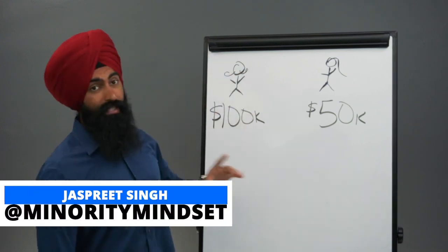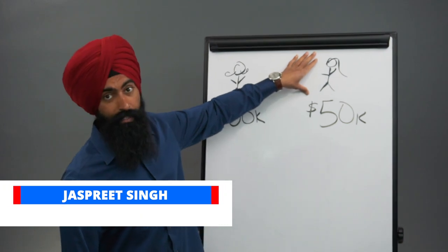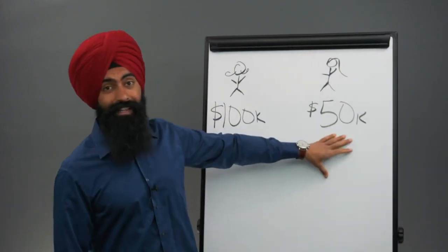Over here you have cousin Bunty who graduated school making $100,000 a year, and over here you have sister Paramjit who graduated school making $50,000 a year.